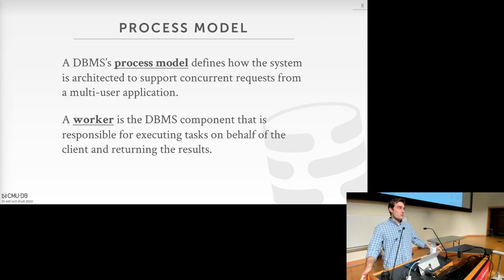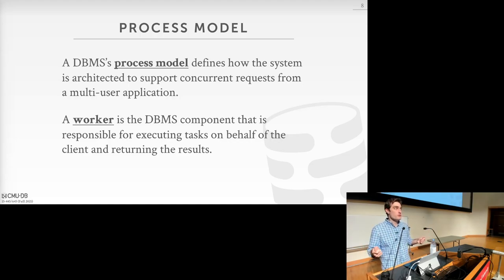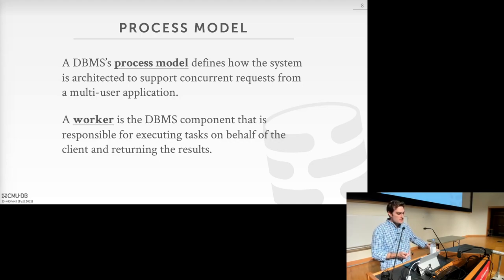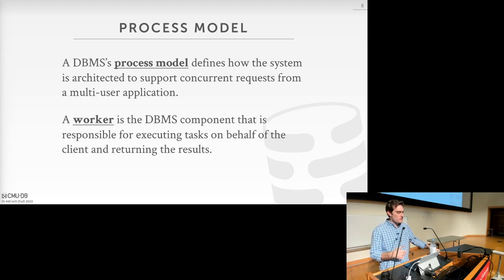The first piece is the process model. The DBMS process model defines how the system is architected to support concurrent requests from multiple users accessing the DBMS. A worker is the component in our DBMS responsible for executing a particular task on behalf of the client and returning the results. The process model defines specifically how we implement these workers in our system.